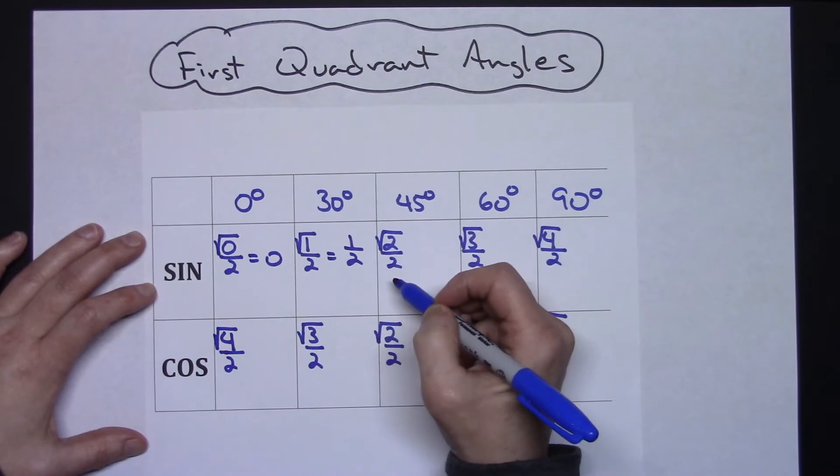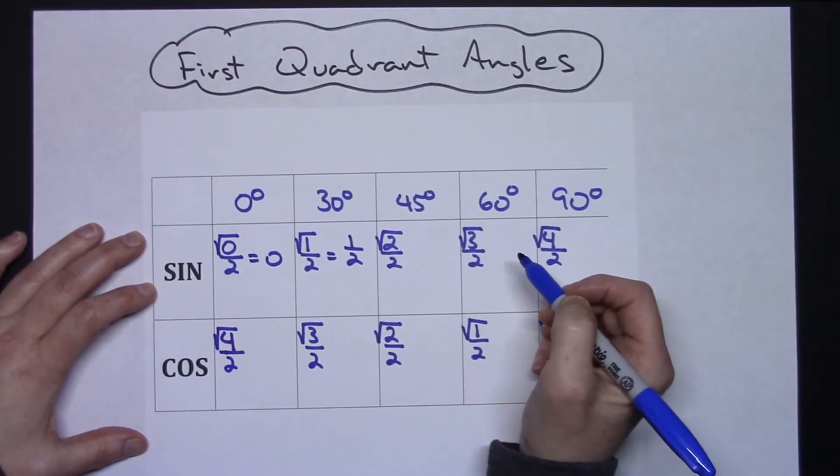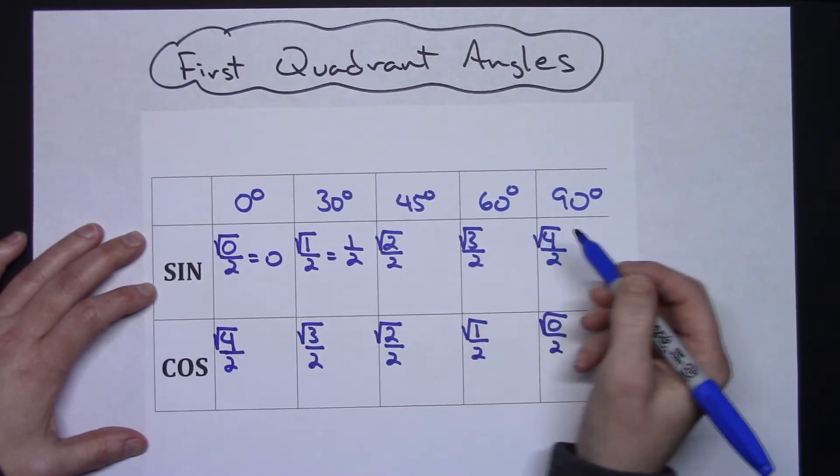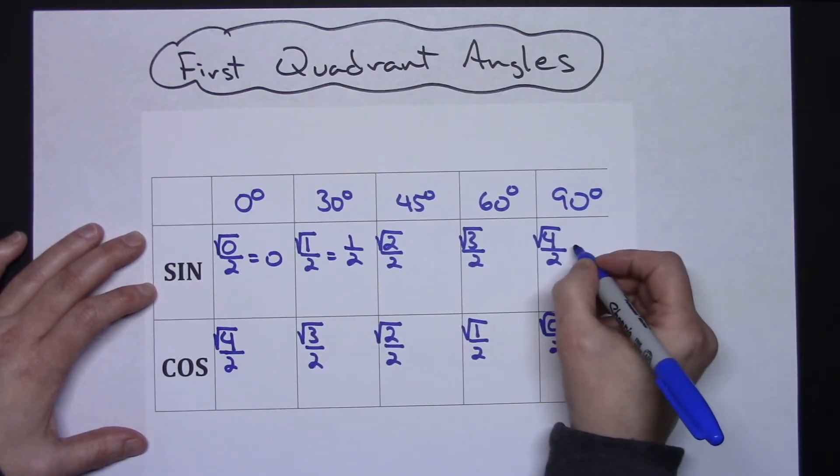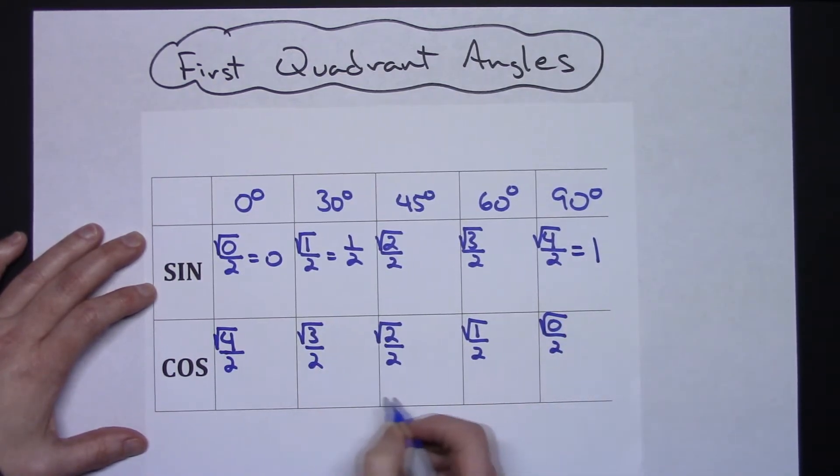Square root of three here can't simplify, so I'm going to leave it. Square root of four is two, two over two simplifies to one.